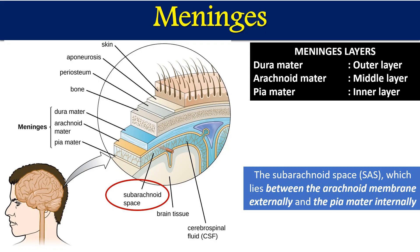Before going to CSF, we should understand some important structures of the brain and where CSF is present. If you see this structure, this is the covering of the brain — we are going to talk about meninges, the covering of the brain. On top of the brain, inside our head and skull, we have skin containing hair, then aponeurosis just below the skin, then periosteum, and then the brain inside the skull.